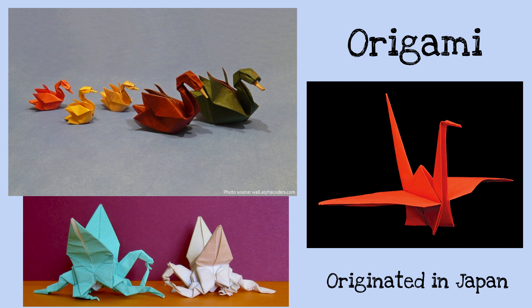Origami — I bet we've seen some of this before. This originated in Japan. At the top you can see some ducks, and a paper crane on the right side. On the bottom you can see some dragons, which are pretty cool. This is a form of art where they use a piece of paper and fold it into the shape of an animal. They don't have to be animals, but most of the time when we see origami, we see animals. This originated in Japan and it's called origami.